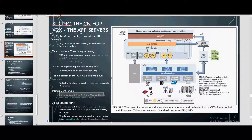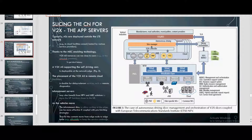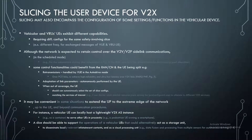Infotainment servers may also benefit from NFV and mobile edge computing (MEC) solutions. As vehicles move, the infotainment slice can be more effective if content is migrated from base station to base station, e.g., from eNodeB to eNodeB, to keep the service continuous. Slicing the user device for V2X: slicing may also encompass the configuration of some settings or functions in the vehicular device. Vehicular UEs and vulnerable road user UEs exhibit different capabilities, requiring different configurations for the same safety slice. Although the network retains control over V2V or V2P sidelink communications, some control functionalities could benefit from being split between the RAN/CN and the UE, such as retransmissions handled by the UE in auto-drive mode over PC5 links.